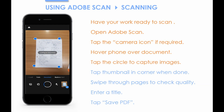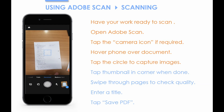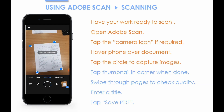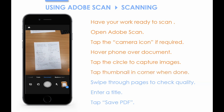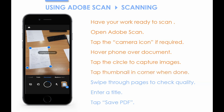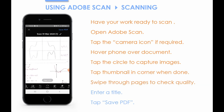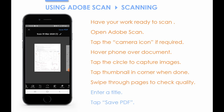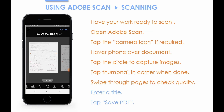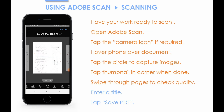Keep scanning until you've scanned all the pages you want to scan in, and then tap the thumbnail in the bottom right corner when you're finished. Next, swipe through the pages to check you're happy with the quality of the scans. You can pinch the screen to zoom in on different pages.